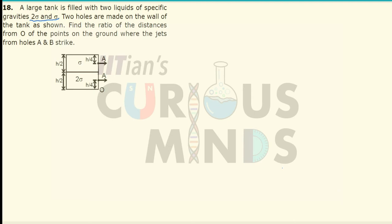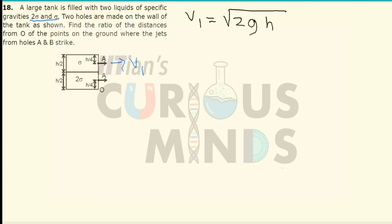This entire tank is filled with two liquids of different densities. The density of the liquid at the bottom is double that of the first. Let us first calculate the velocity of the jet from the first stream. It will simply be V1 = √(2gh), where the height above this point is h/4. So V1 = √(2g · h/4) = √(gh/2). Let this be equation number 1.